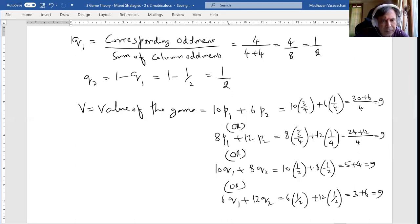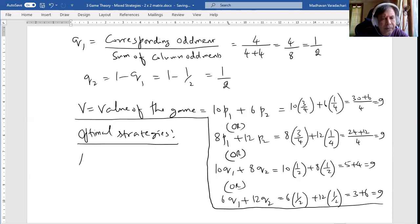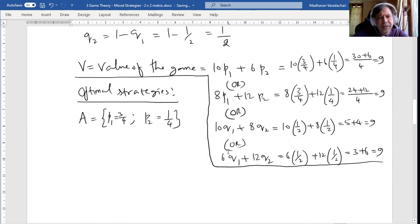Now I can write down the optimal strategies for player A. We can write it as P1 equal to 3 by 4, P2 equal to 1 by 4. What does it mean? If he is adopting his strategies 4 times total, 3 times he will adopt his first strategy and 1 time he will adopt his second strategy.